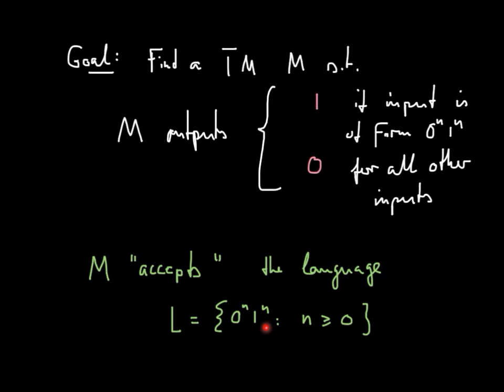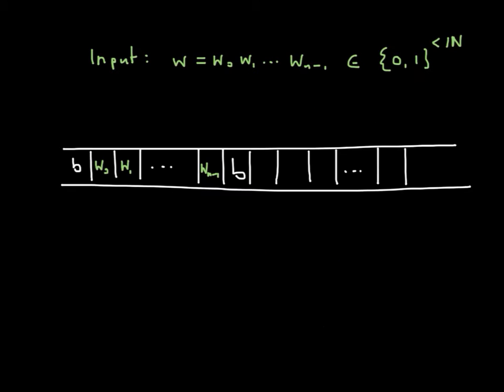So here we would see a first significant difference between the computational power of Turing machines and finite automata. So how would such a machine work? Let's start with the usual input.